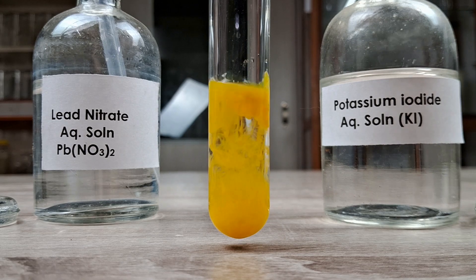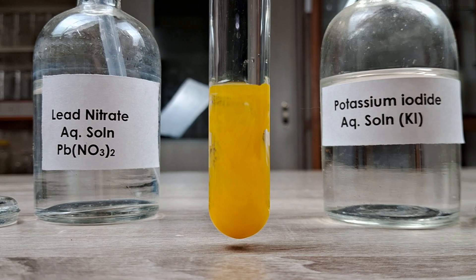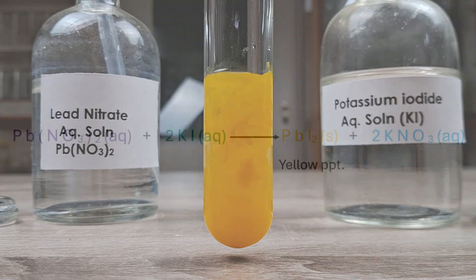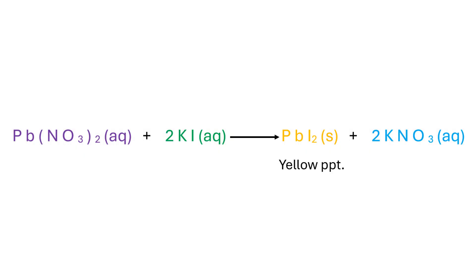The precipitate intensifies as you keep on adding more drops. The reaction between lead nitrate and potassium iodide is classified as a type of double displacement reaction because two simultaneous displacement events occur in the same reaction mixture.